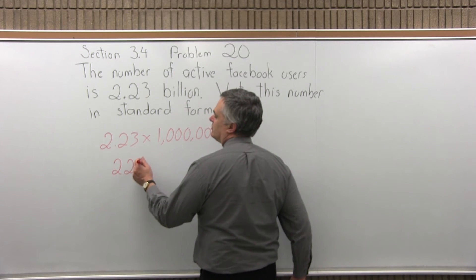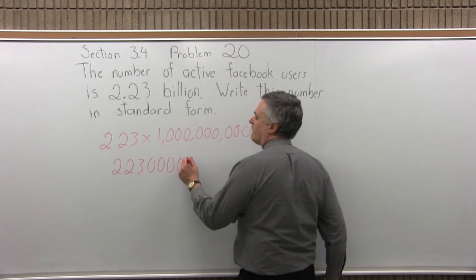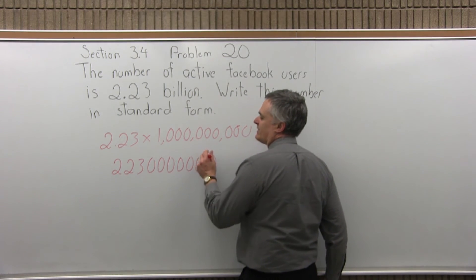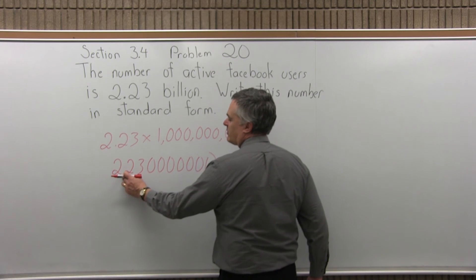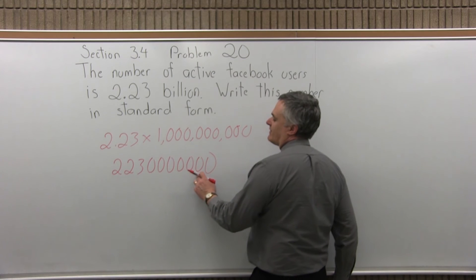So you do 2, 2, 3, and then seven zeros: 1, 2, 3, 4, 5, 6, 7. So starting from here, that would move it nine spots: 1, 2, 3, 4, 5, 6, 7, 8, 9.